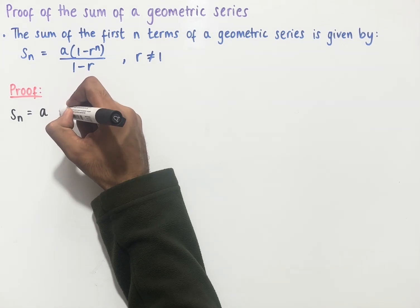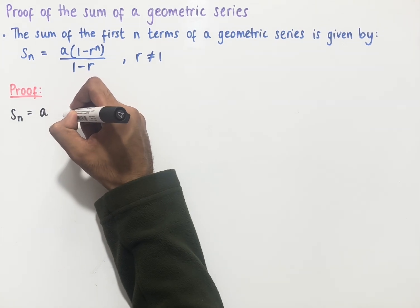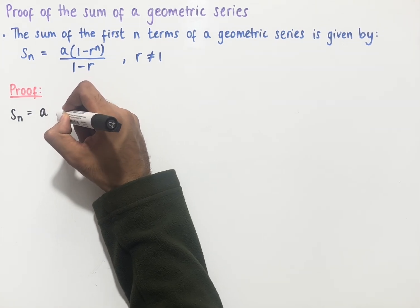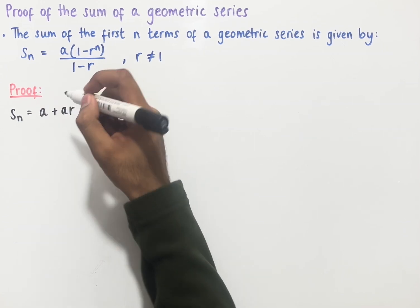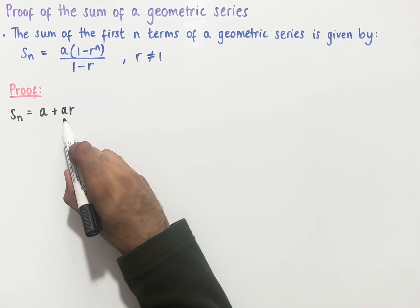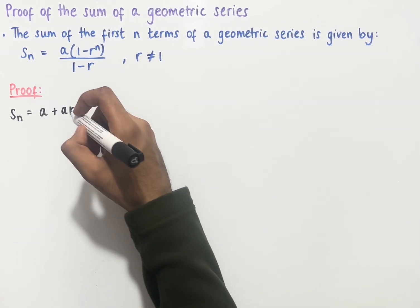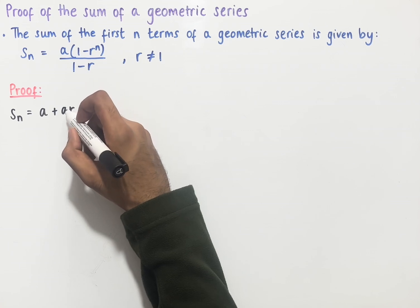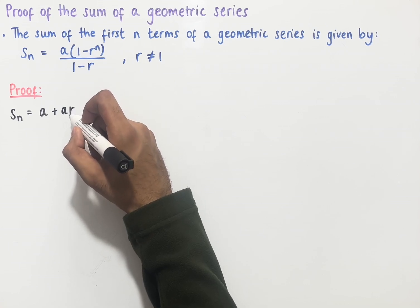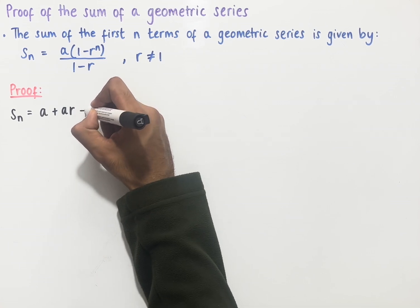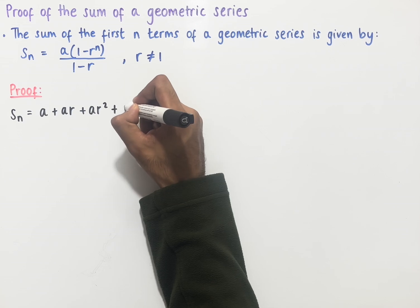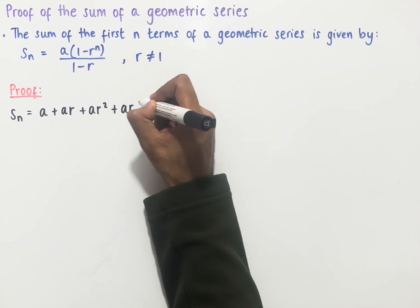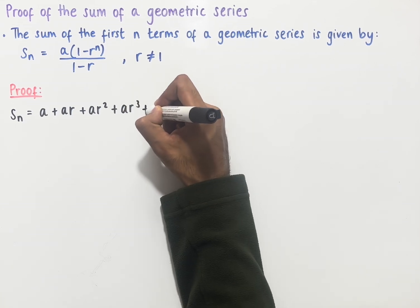To get the next term we have a times r, which is ar, and since this is a sum we're going to add this on. Now if we want to work out the next term after this we do ar times r, which gives us ar squared, and now carrying this on we end up with ar cubed.